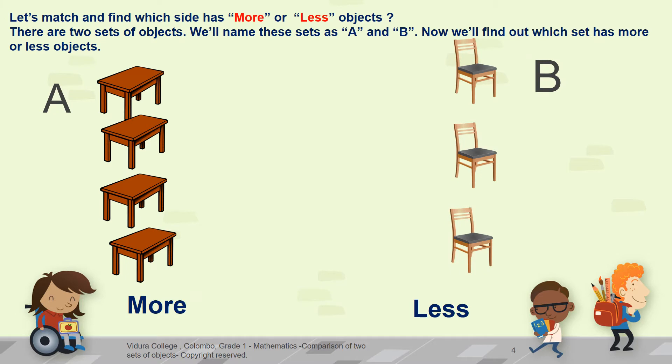Let's match and find which side has more or which side has less objects. There are two sets of objects. We will name these sets as A and B. Now we will find out which set has more or less objects. Okay children, just like we find out about cups and saucers, now we will find out which has more or less objects.